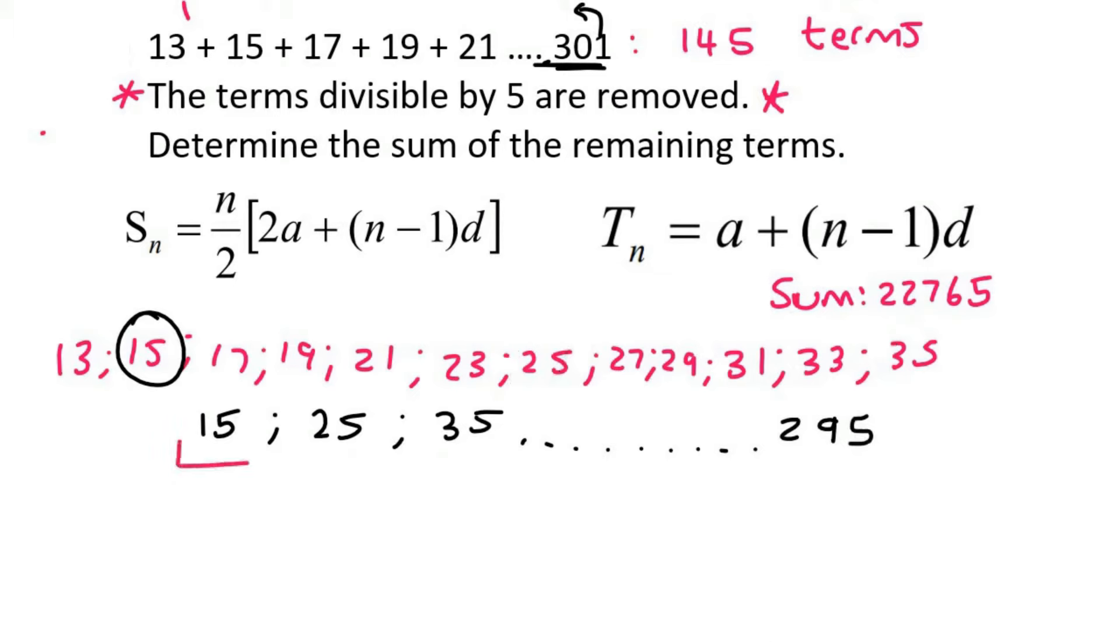So now, our goal is to find the sum of all of these terms. Once again, we don't know how many terms there are. But we can use our TN formula to work out the term number of 295. So we're using this formula over here once again.